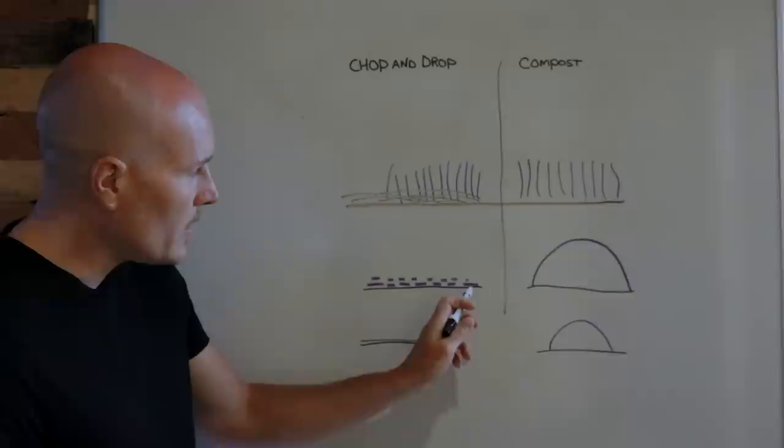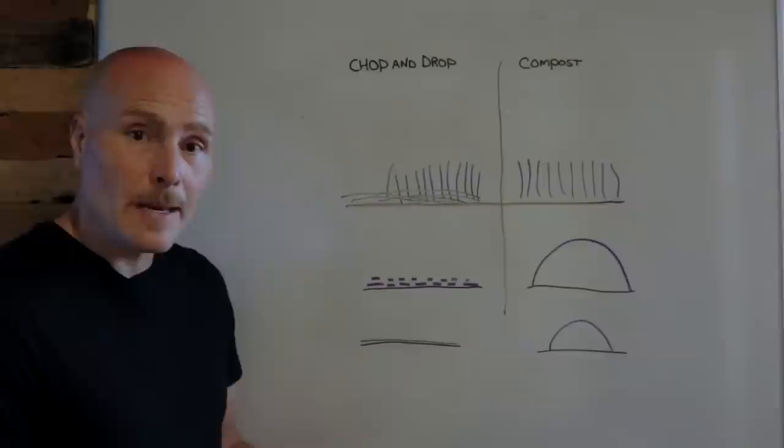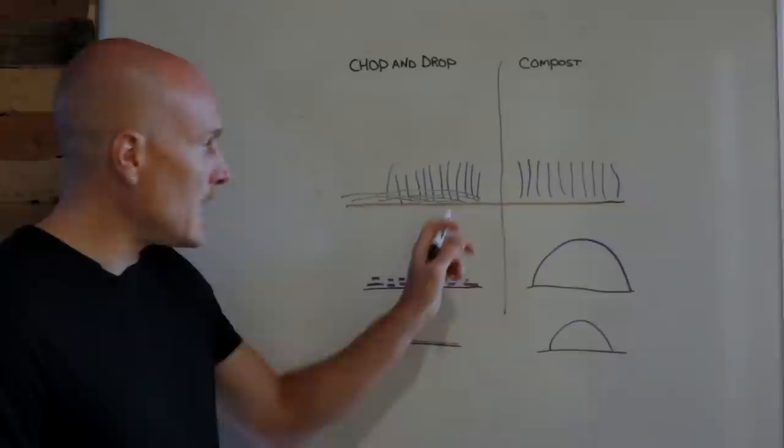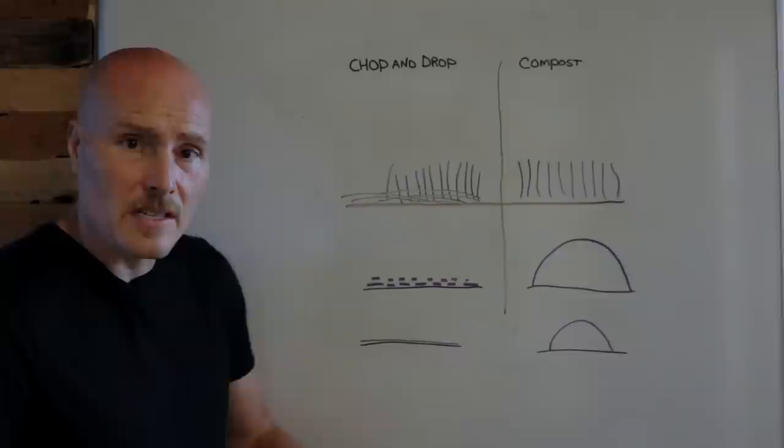When you do that, what you end up with is a layer of biomass on the soil surface. And it's going to be a relatively thin layer of biomass compared to the height of a compost pile. I mean, even if you have six foot tall cover crops and you trample them down, by the time they lay on each other and all the air space eventually comes out, you're not going to be left with a very thick layer.